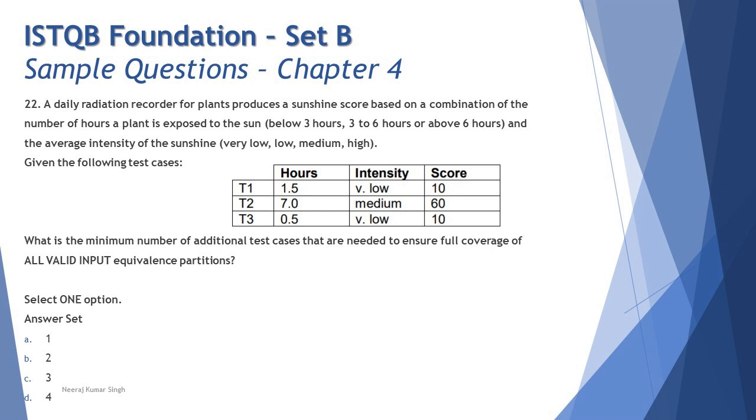T2 is 7.0 which is above 6 hours, the third range, and medium is covered here. Don't worry about the score because outputs are different. T3 is 0.5 which is less than 3 hours and very low, repeating exactly T1. With these three test cases, we observe less than 3 hours and greater than 6 hours is covered, so one range from the duration is not yet covered, which is 3 to 6 hours.